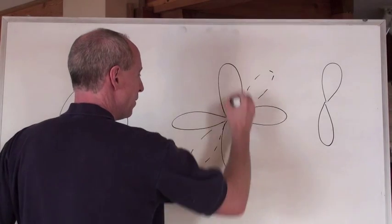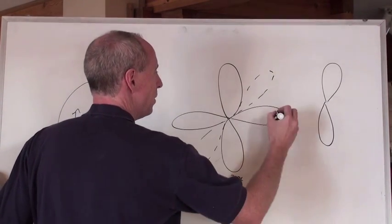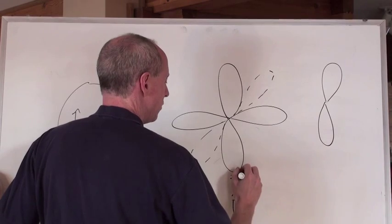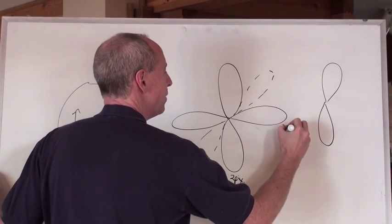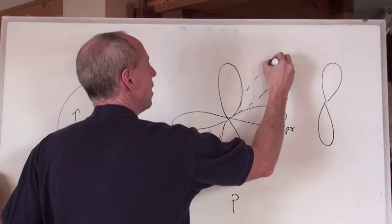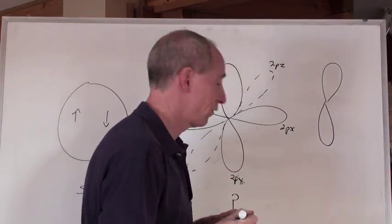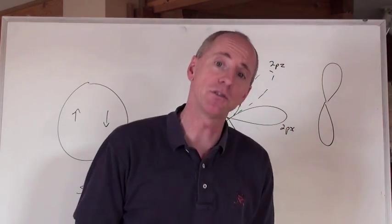And so this would be a 2px here, and this could be the 2py, this could be the 2px, and this one we could say is the 2pz, and they're aligned on three different axes in three-dimensional space.